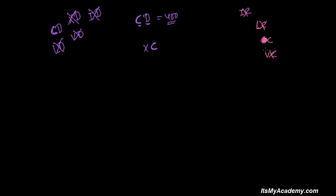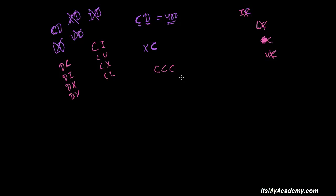After D, we can write anything: we can write C, we can write I, we can write X, we can write V — anything is possible after D. Similarly after C, you can put I, V, X, L — anything you can put. Also, C can be repeated a maximum of three times.